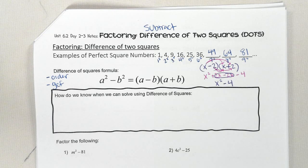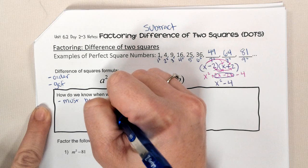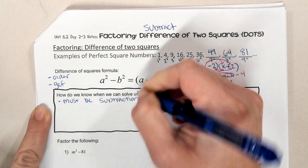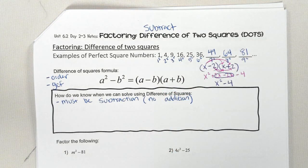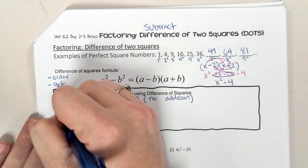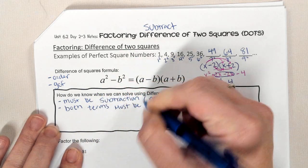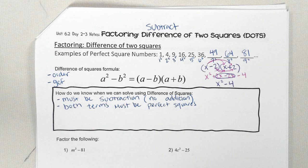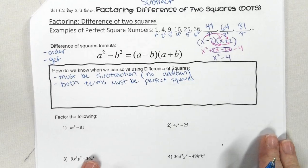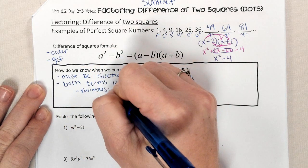Because the positive and the negative make them zero out. So knowing that, we're going to talk about after we put them in order and take out the GCF. Shouldn't we do that all the time first, no matter what, when we're factoring? Yes. So after we've put it in order and taken out our GCF, these are the things you look for to decide if you can use this method. They must be subtraction — no addition. Both terms must be perfect squares.